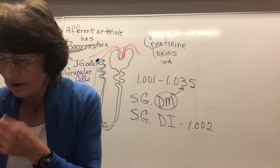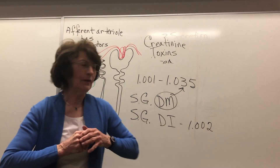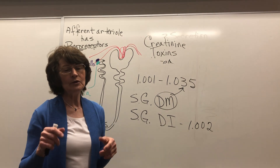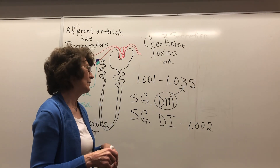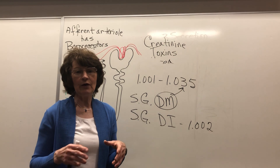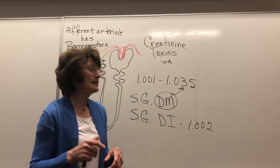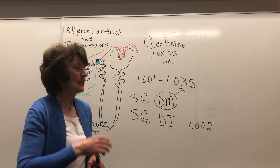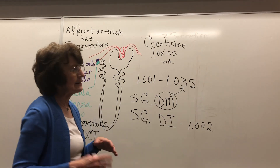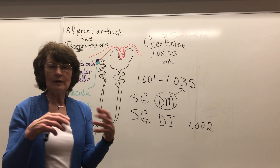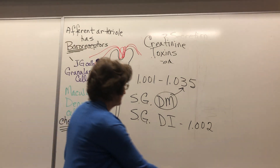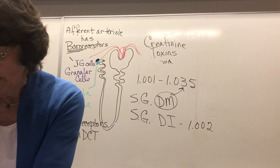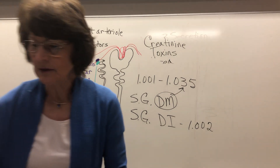I want you to look at number 8 on page 61 for proteinuria. Please underline where it says proteinuria or albuminuria. This is an early marker of kidney disease — if there are proteins leaking out, something's wrong with the glomerulus and the podocytes. Now let's go over to the following page and look at disorders.